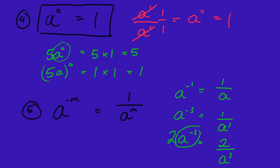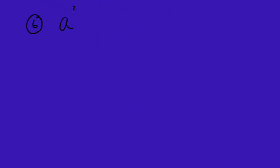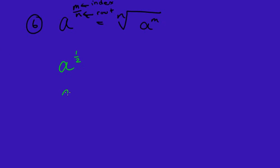Rule 6, often the more challenging one: a to the power of m over n — a fractional index. Whenever you see a fraction, there's going to be a root sign. The denominator determines the root, so the n is the root and the m is the index: n-th root of a to the power of m. For example, a to the power of a half is the square root of a; a to the power of a third is the cubed root of a.